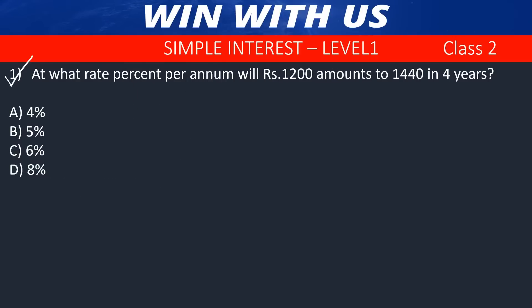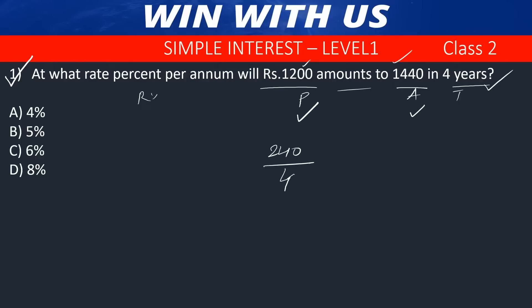Question number 1. At what rate percent per annum will 1200 amount to 1440 in 4 years? This is the rate percentage, this is the principal, amount, and time. We will start with the formula. Principal is 1200, amount is 1440 — the amount of interest is added. The difference between the interest is 240. The interest is over 4 years. If we divide by 4, 60 is the interest per year.